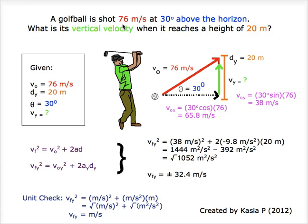A golf ball is shot 76 meters per second at 30 degrees above the horizon. What is its vertical velocity when it reaches a height of 20 meters?